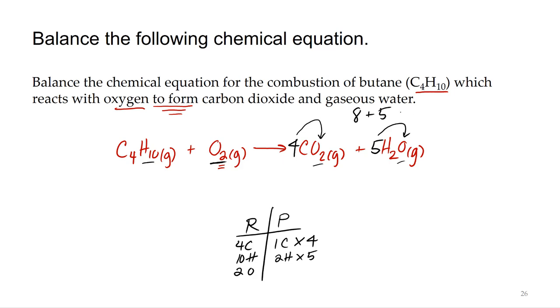And then five waters, one oxygen in each water, so that's five, and so that's going to equal 13. So I've got 13 oxygens on the product side. Of course I need to balance this. I've got two oxygens on the left side, 13 oxygens on the right.